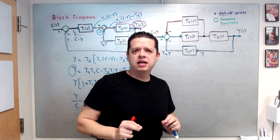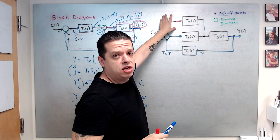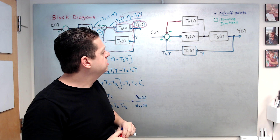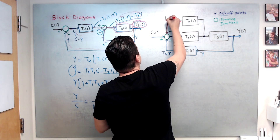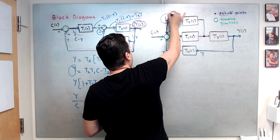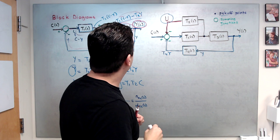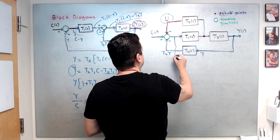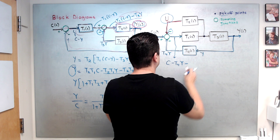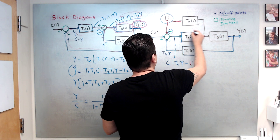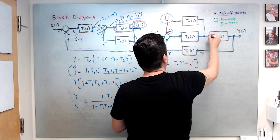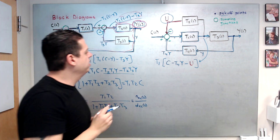When something like this happens and you get stuck, you don't know a signal you need to proceed — give it a name. I'm going to call this unknown signal U. I don't know it for now, but I will proceed. At the end, don't forget you need to find U(s). So this signal becomes C minus T4·Y minus this unknown signal U, and that quantity is then multiplied by T1.